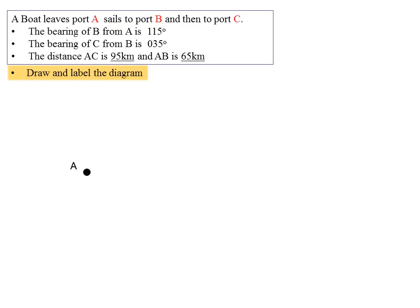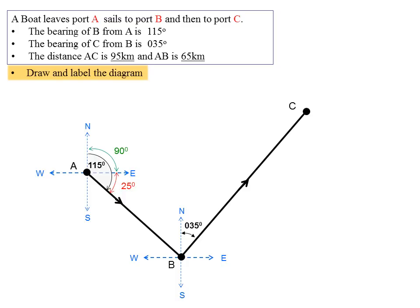So the first thing we do is we identify where we are which is point A and we superimpose on that a bearing locator so we could identify the bearing from A to B as 115 degrees as shown. Notice we can always imagine that 115 degrees is made up of two angles, 90 degrees between north and east and 25 degrees between east and the bearing from A to B. Here we are now at B and we have again superimposed a bearing locator around the point B so we can identify 35 degrees measured from north and that will give us our point C. We can complete that triangle and add the other two pieces of information given which is 95 km from C to A and 65 km from A to B and that completes our first task which is to draw and label the diagram.